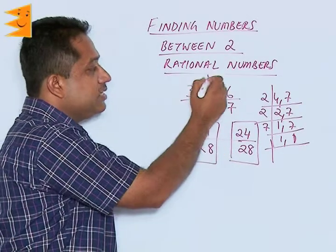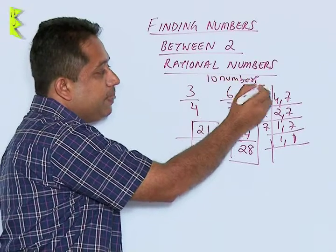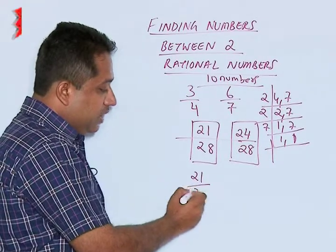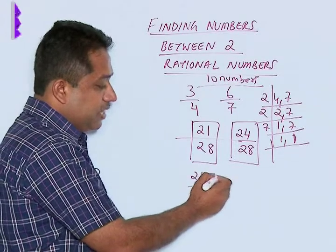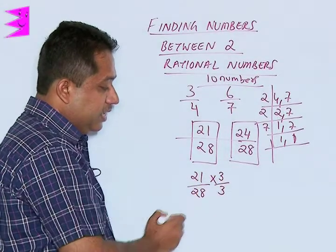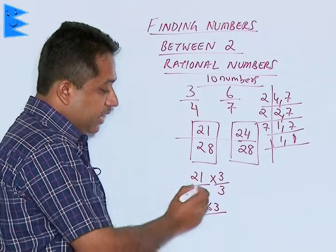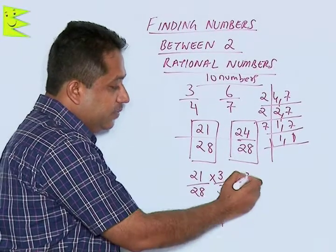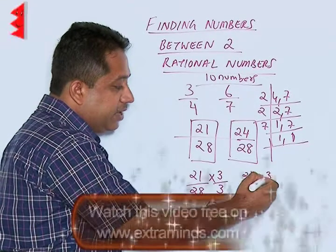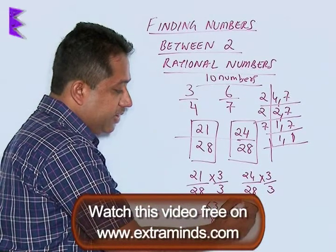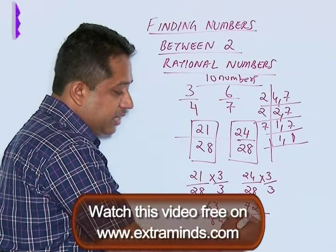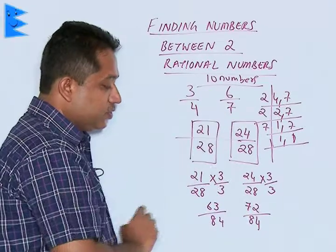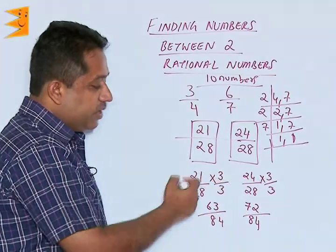That is not sufficient because the question asks us to find 10 numbers, and we are only able to find two numbers at the moment. So we have to do some multiplication and division. Let us multiply and divide both numbers by 3. 21 into 3 gives 63, and 28 into 3 gives 84, so we get 63 by 84. And 24 into 3 gives 72 by 84. Between 63 and 72 we still do not have 10 numbers, so the multiplier chosen is too small and we need to take a higher value.